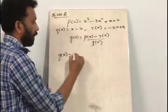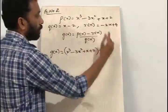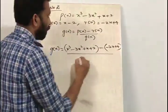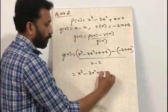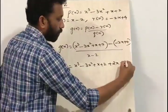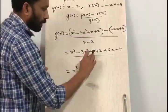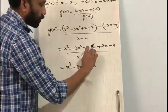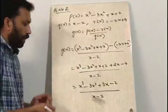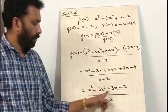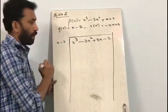So g of x is equal to p of x, that is x cubed minus 3x squared plus x plus 2, minus r of x, which is minus 2x plus 4, all divided by x minus 2. When we open the bracket, it becomes x cubed minus 3x squared plus x plus 2 plus 2x minus 4, divided by x minus 2. Simplifying: x cubed minus 3x squared plus 3x minus 2, divided by x minus 2.